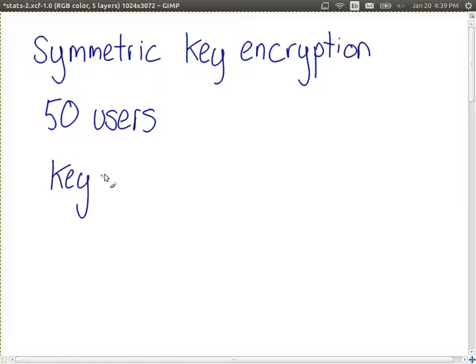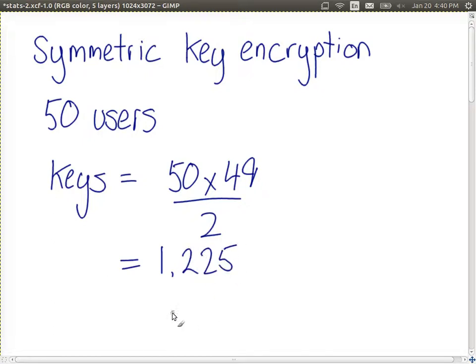With 50 users, the number of keys, well, we need a key for each pair of users. So user A and B needs a key. So we can calculate the number of keys as 50 times 49 divided by 2, which is 1225. In a system of 50 users, where each user uses symmetric key encryption, we need a total of 1225 keys to be shared amongst those users.